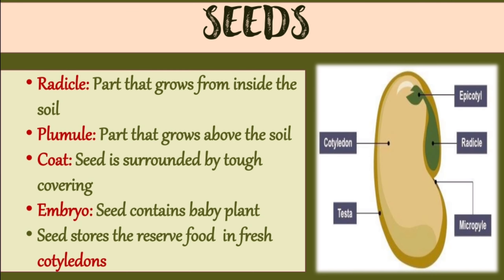A seed has different parts. First is the radicle. The radicle is the part that grows from inside the soil — you can see the green part in the picture is the radicle. Next is the plumule — the part that grows above the soil. And next is the coat: a tough covering that surrounds the seed.